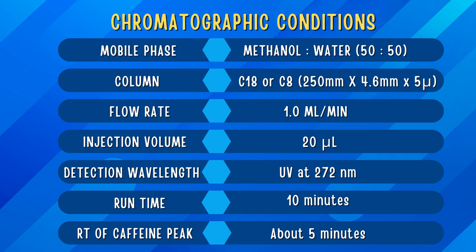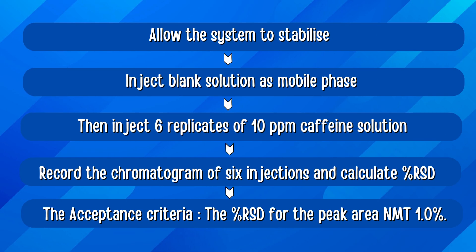Set the HPLC system using chromatographic conditions: mobile phase methanol and water in 50:50 ratio; column C18 or C8 with 250 mm length, 4.6 mm inner diameter, and 5 micron particle size; flow rate 1 ml per minute; injection volume 20 µl; detection wavelength UV at 272 nm; runtime about 10 minutes; expected retention time of caffeine peak about 5 minutes. Allow the system to stabilize, then inject blank solution as mobile phase, and then inject 6 replicates of 10 ppm caffeine solution. Record the chromatogram of 6 injections and calculate the percentage RSD of peak area of caffeine.